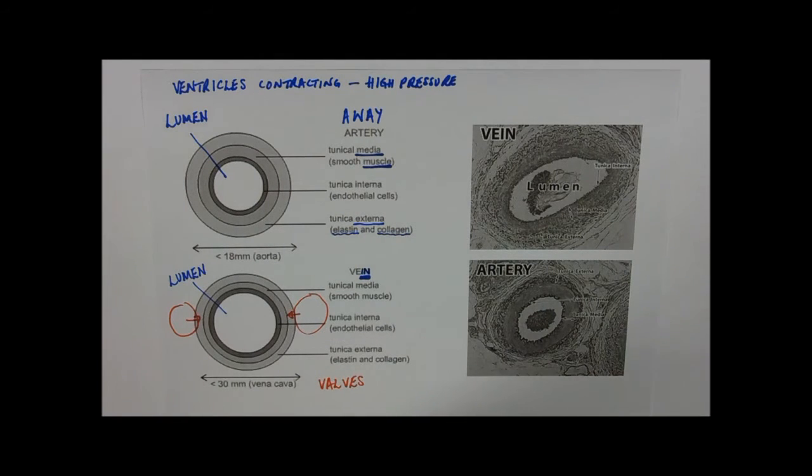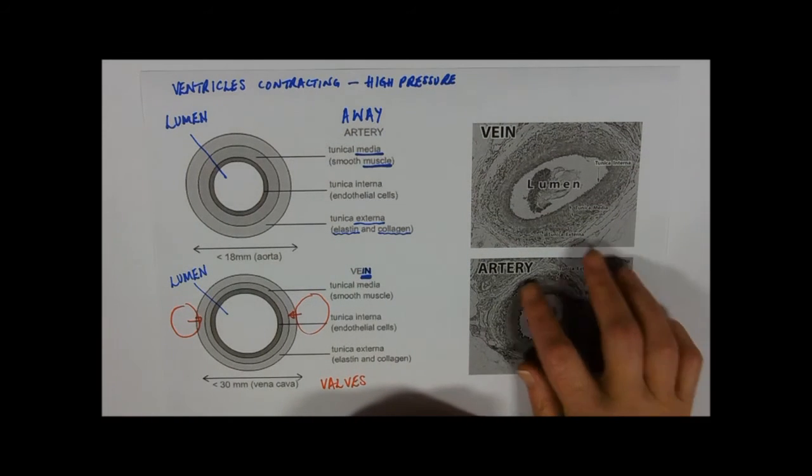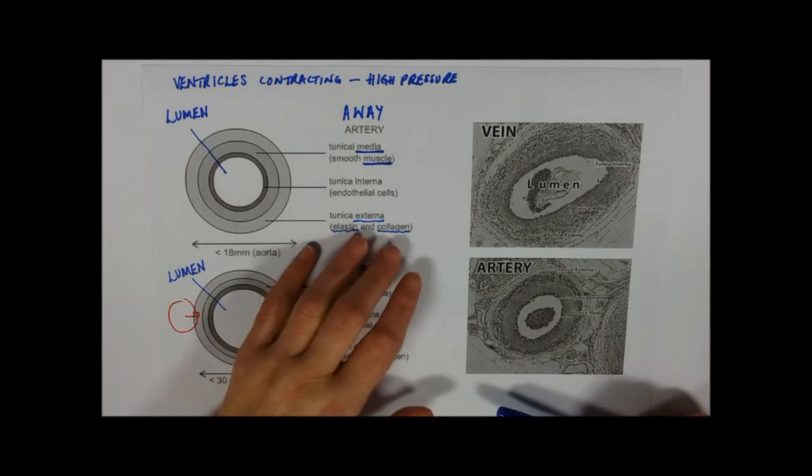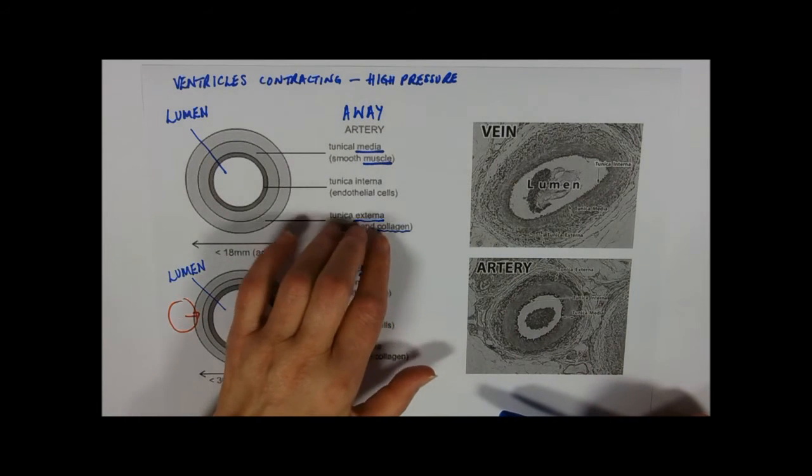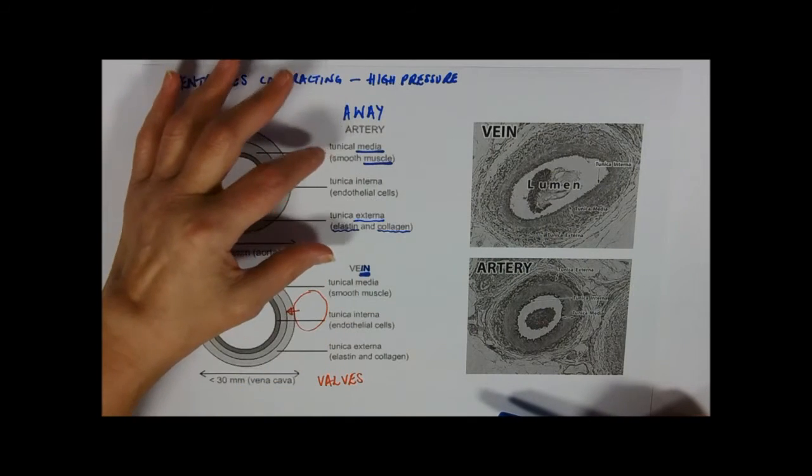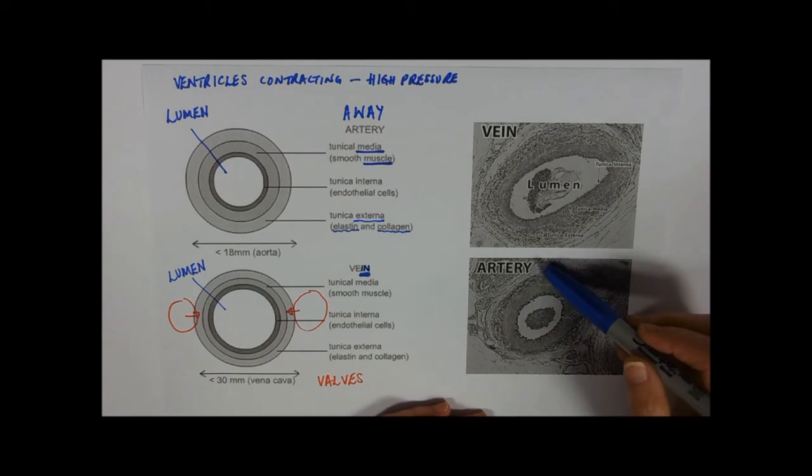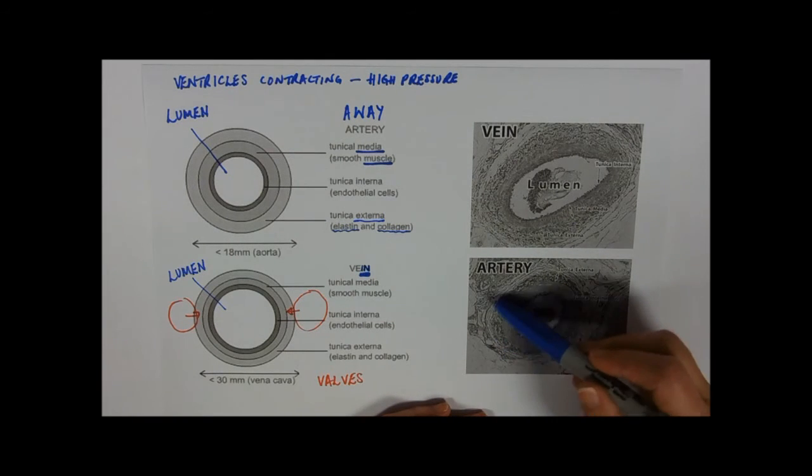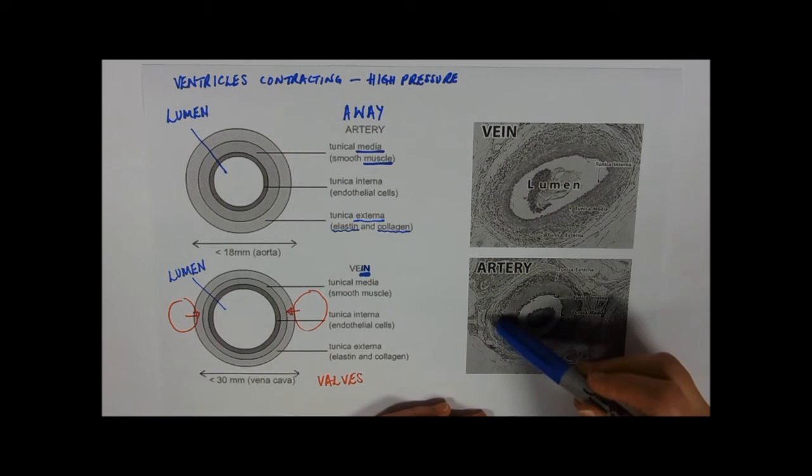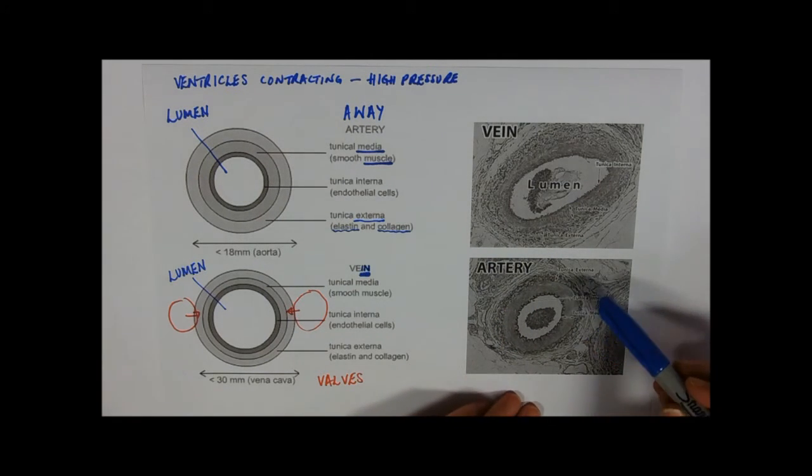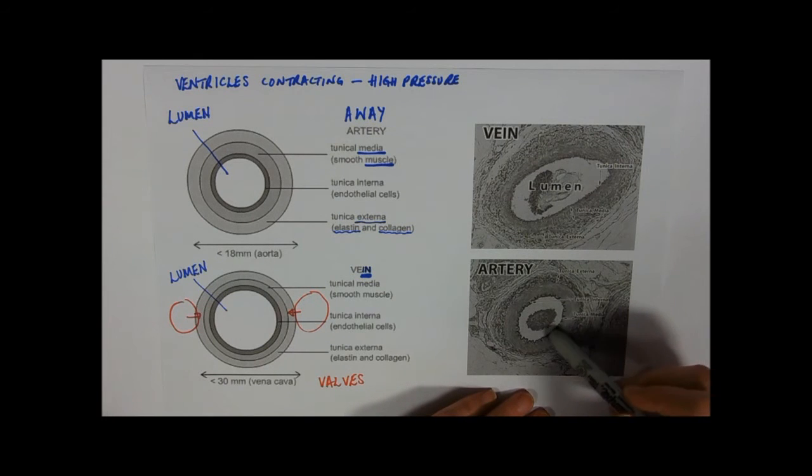Arteries pretty much look circular down a microscope, and that's because they've got this strong collagen and thick tunica media and externa which maintains their shape even when they're sliced through. We can see we've got the tunica externa around the edge, we've got the tunica media nice and thick and very visible. It has lots of nuclei in it, it's usually quite purple, and then a very thin purple line, the tunica interna, made of your endothelial cells.